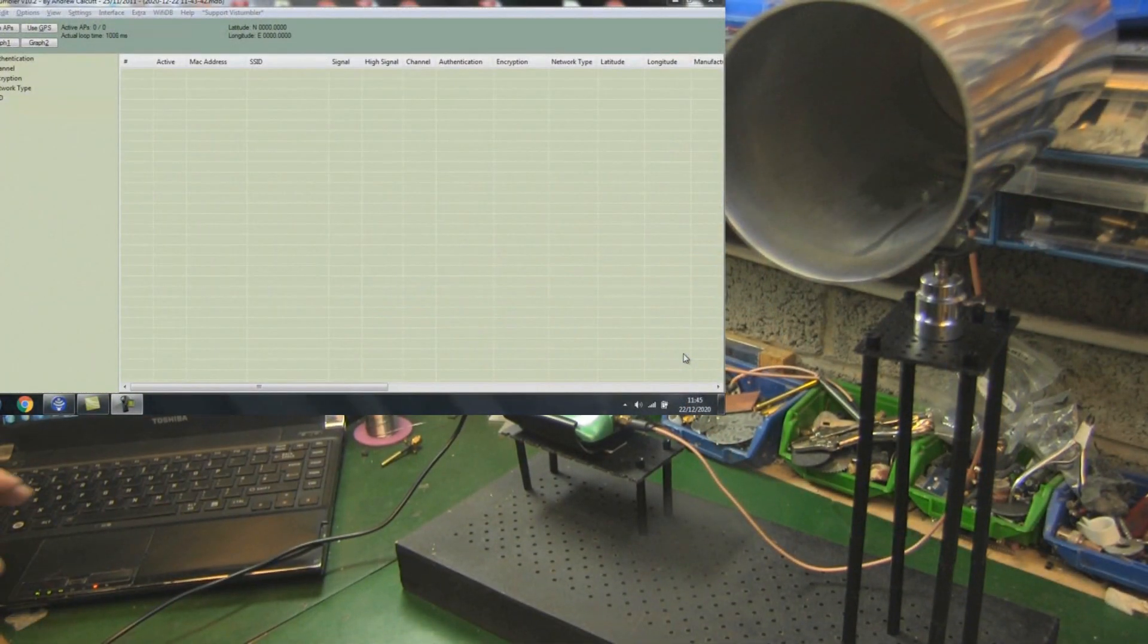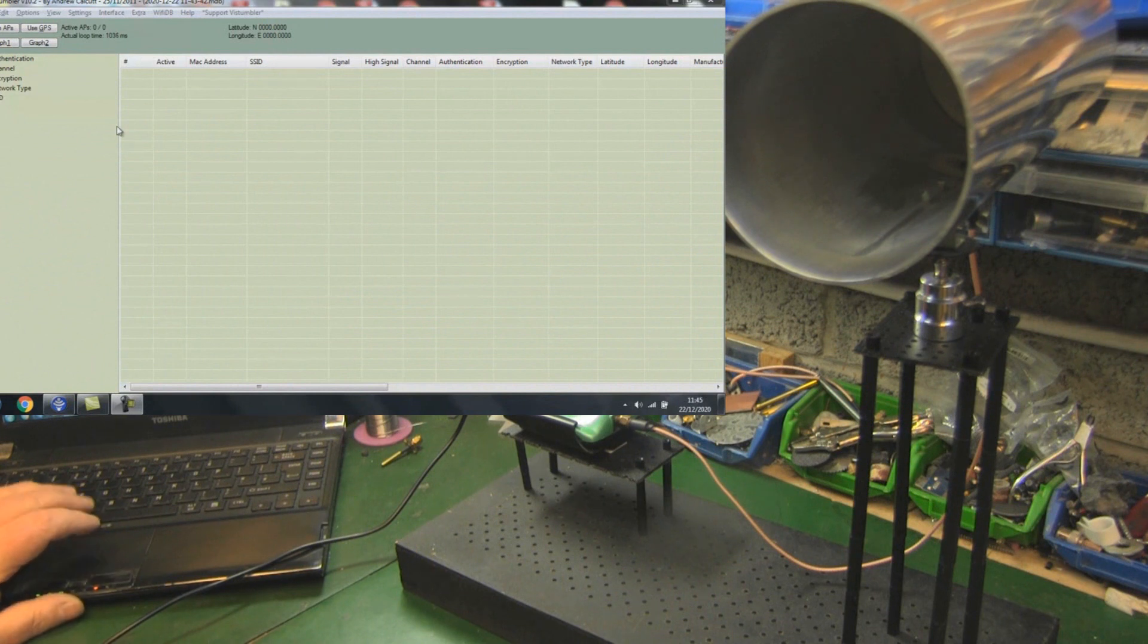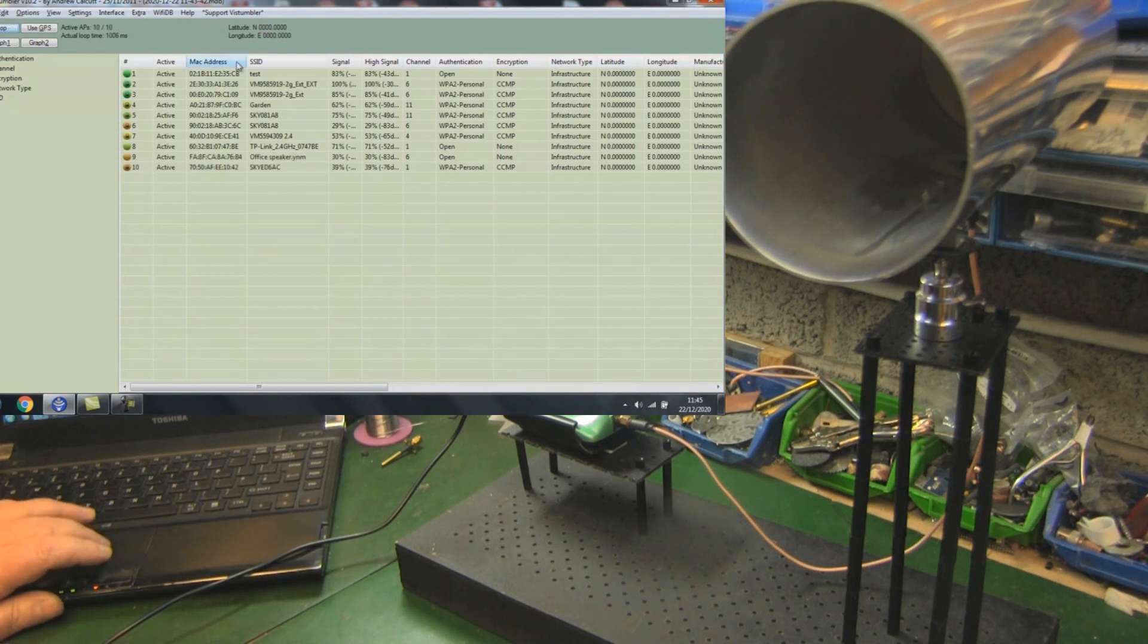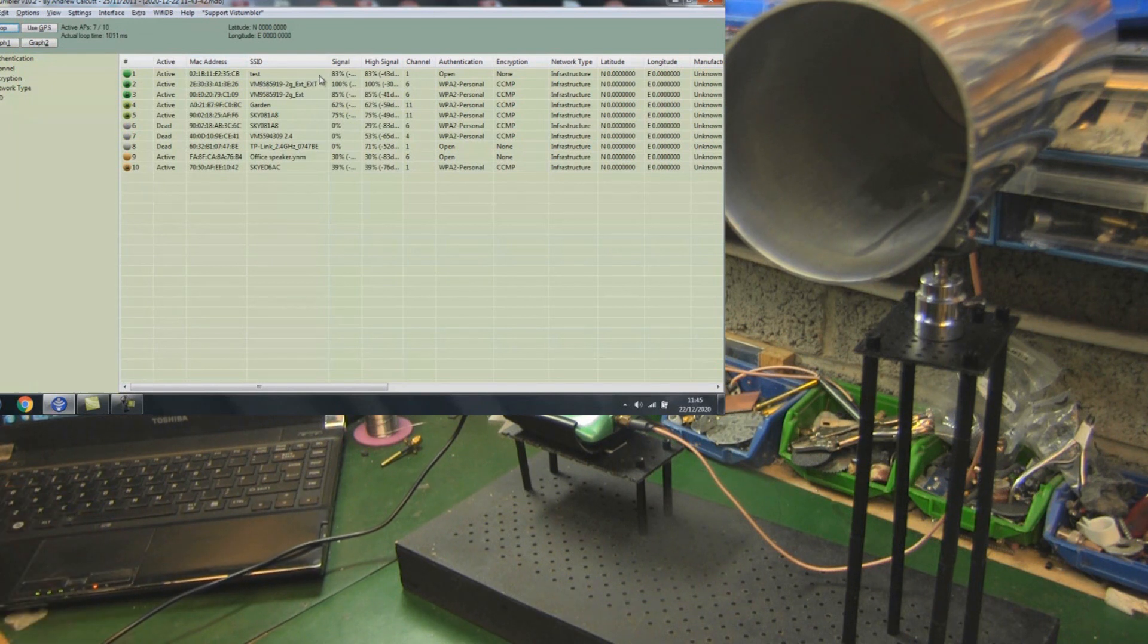Test number three with the sleeved monopole. We can already see a lovely green test signal there, 83 percent. That's phenomenal. Just slightly over 10 percent of increasing gain using Vista Stumbler. That's a definite indication the sleeved monopole is adding more gain to the waveguide than a simple monopole. I'm really pleased with that.